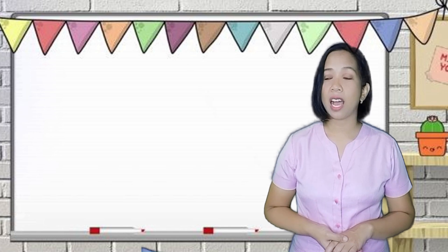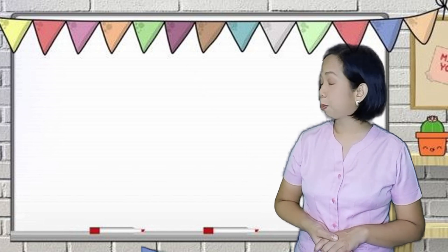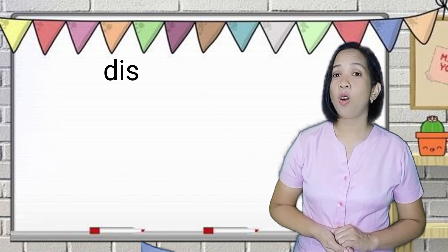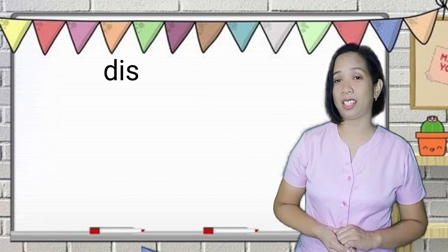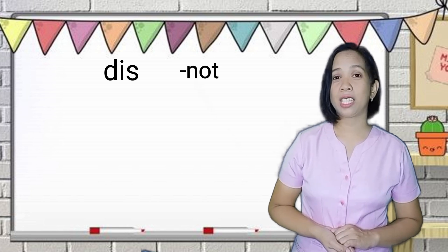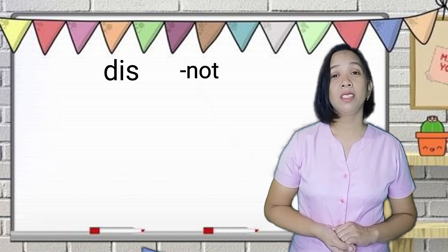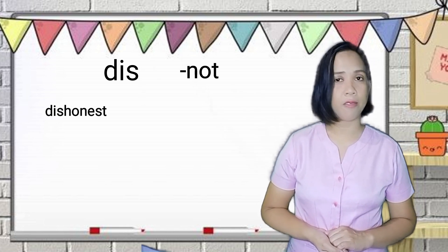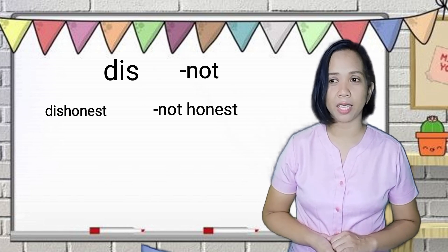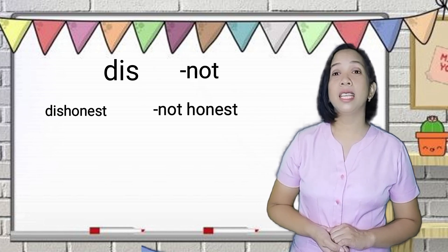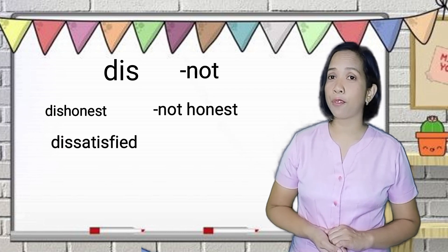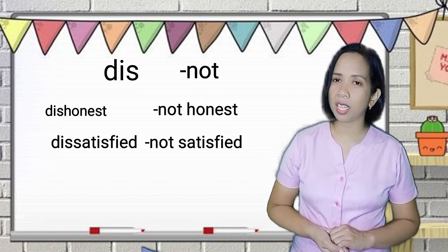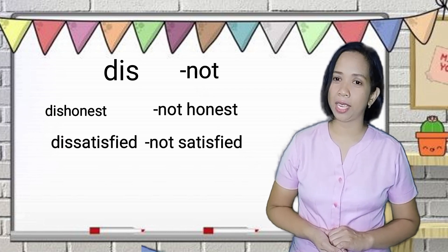Our next prefix is dis, which also means not. For example, dishonest, which means not honest; dissatisfied, which means not satisfied.